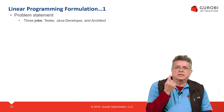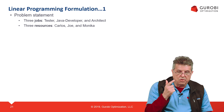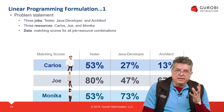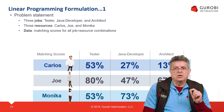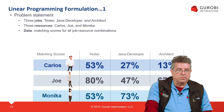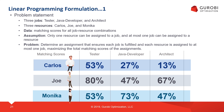We have three jobs: tester, Java developer, and architect. And we have three resources: Carlos, Joe, and Monica. Our data are the matching scores of the resources and jobs, which tell us how well a resource can perform a job. We assume only one resource can be assigned to a job and at most one job can be assigned to a resource. The problem is to determine an assignment ensuring each job is filled and each resource is assigned to at most one job, with the goal of maximizing the total matching scores.